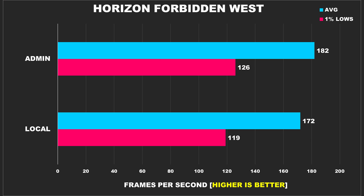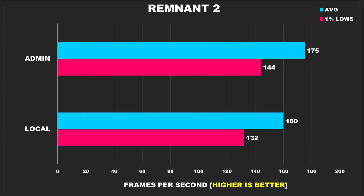The next game is Horizon Forbidden West, and with this game we do see a performance boost — 6% to our average FPS and 1% lows. It's not a huge boost and you really wouldn't be able to tell the difference. A game that shows a larger performance uplift is Remnant 2, where we see a 9% uplift to both our average FPS and 1% lows. Even so, it's not a high enough performance uplift for someone to justify running the admin account.